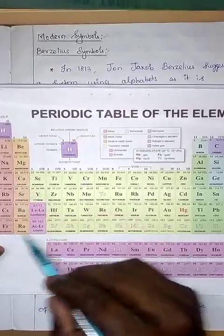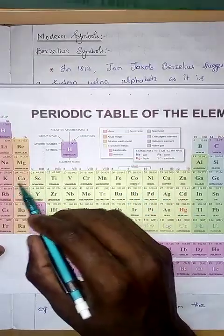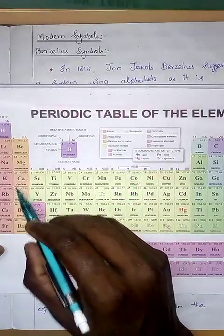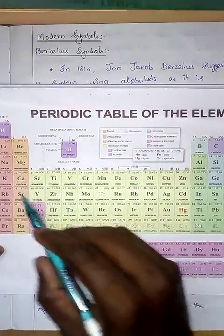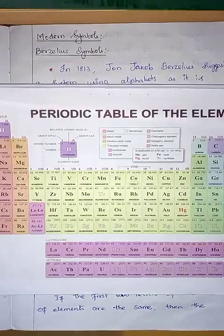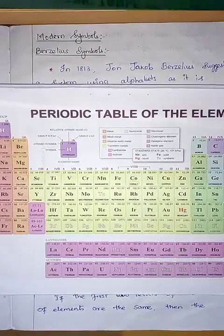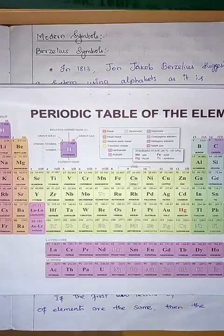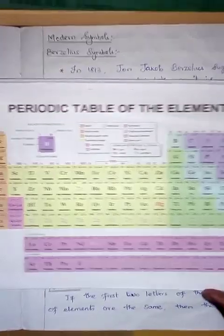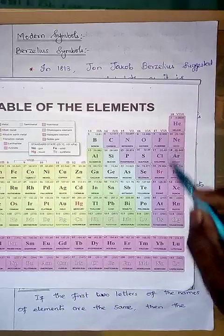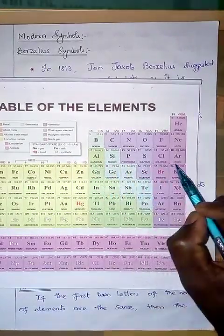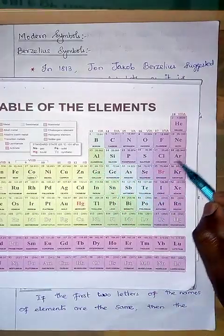Similarly, calcium and cobalt both start with C, so a second letter is included to distinguish them. For aluminium and argon, both start with A — the next letter is L for aluminium giving Al, and R for argon giving Ar.